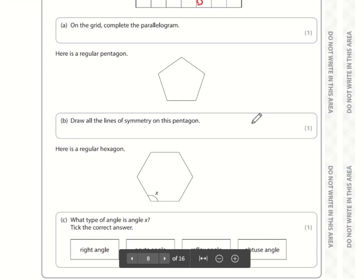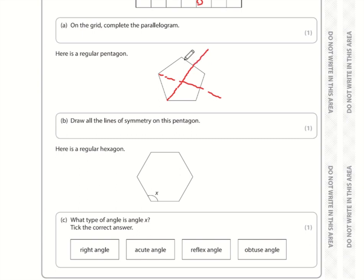We need to draw all the lines of symmetry on this pentagon. If you go from one point to halfway through the other side, that's one line of symmetry. We can do that the same from every point. So there will be a total of five lines of symmetry.